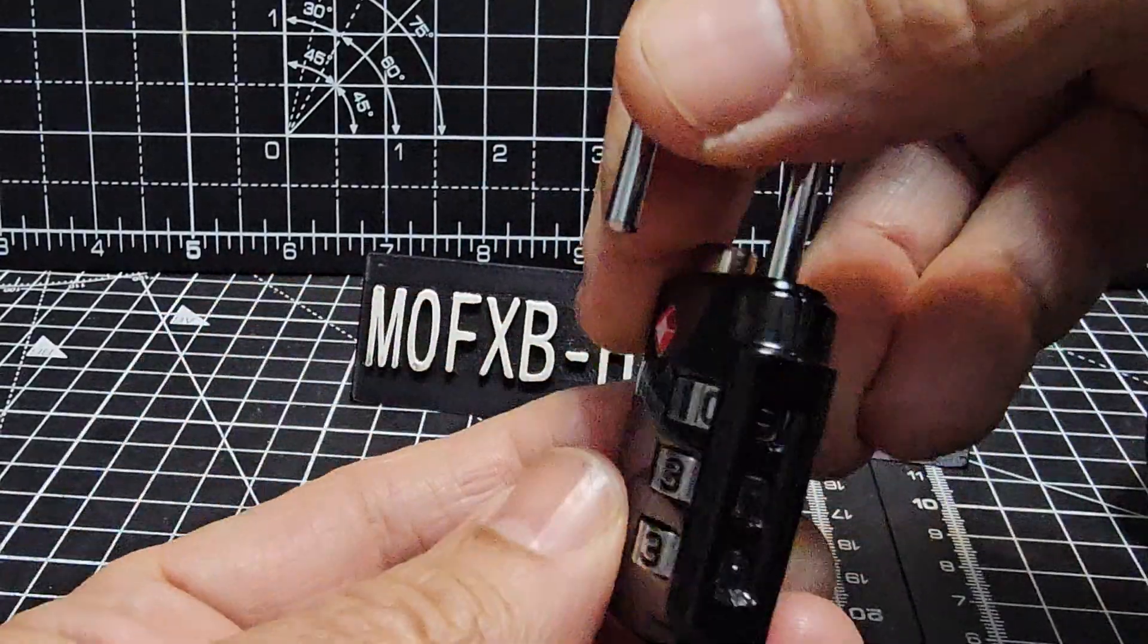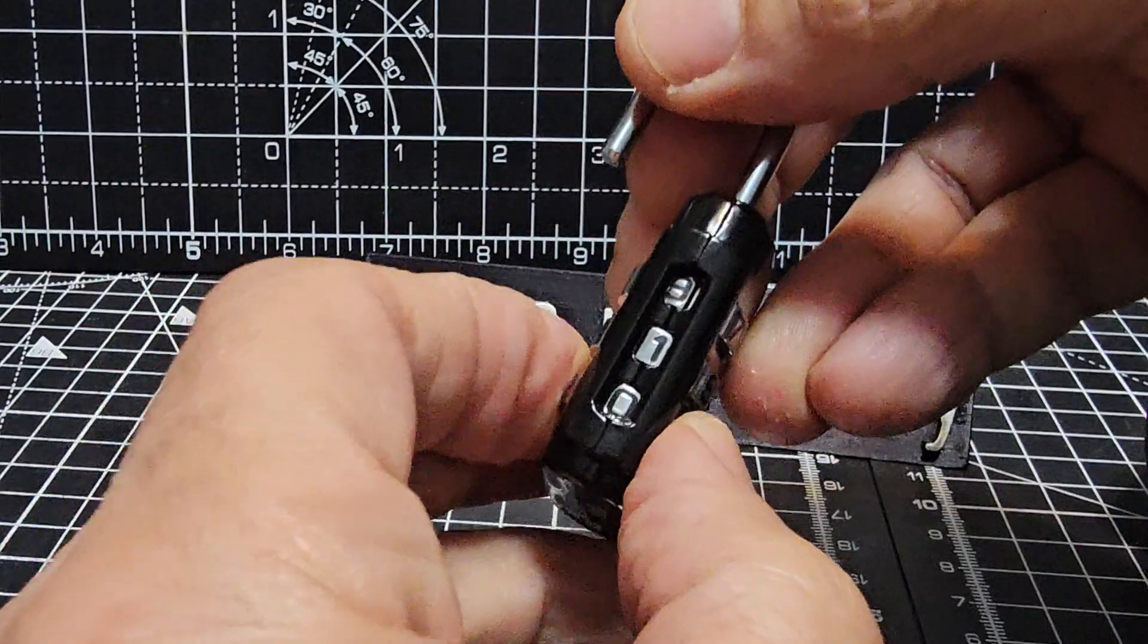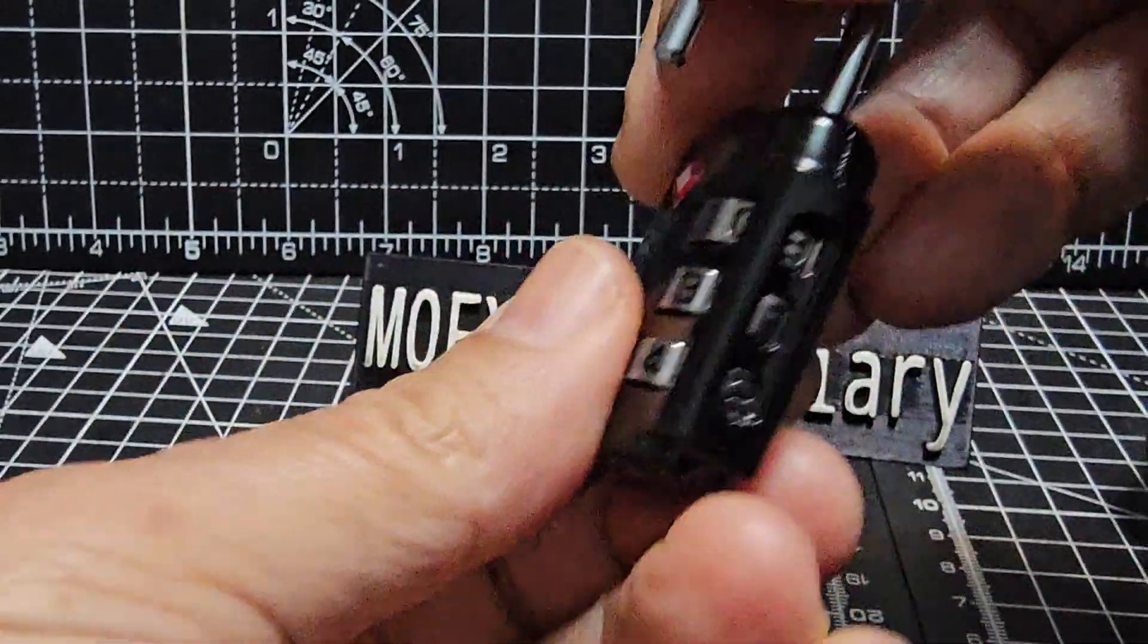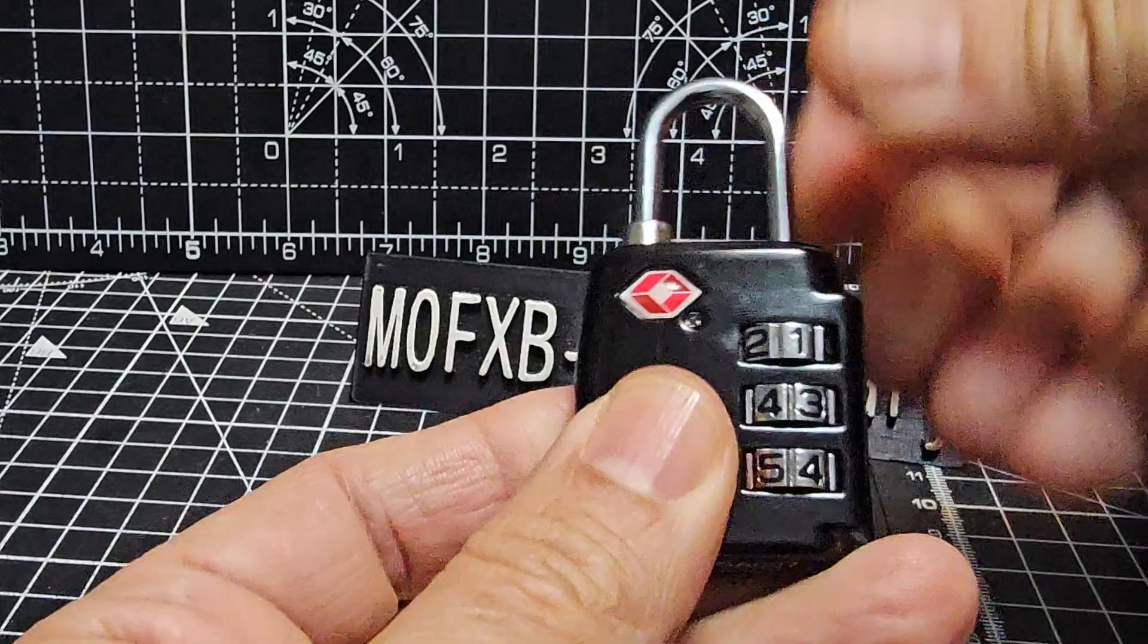So let's just change it to 991. Let's go to 912. Okay, then we pull it up, turn it around, lock it.